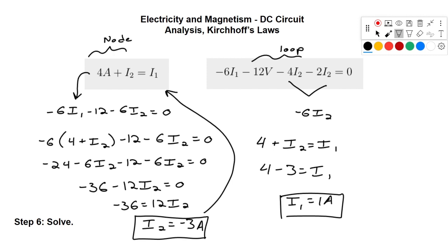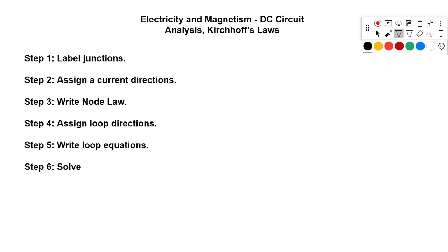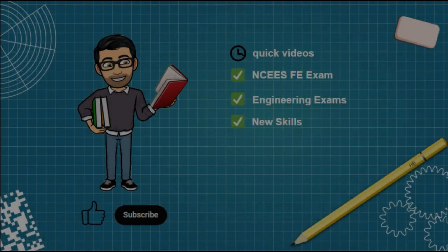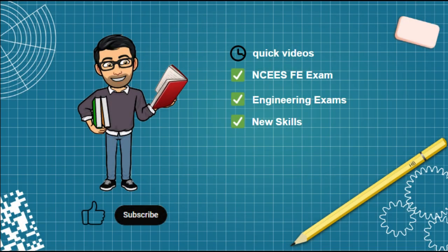Now if we want to find the voltages across the resistors, we just use V = IR — multiply the current by whichever resistor it's flowing through. To recap: we labeled junction points, assigned current directions arbitrarily, wrote the node law, assigned loop directions while keeping in mind that a loop containing only a current source can't be used for KVL, wrote our single loop equation, and solved. Follow the links in the description for personal tutoring, and like and subscribe to get notified when new videos drop.